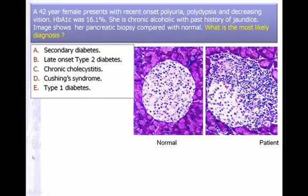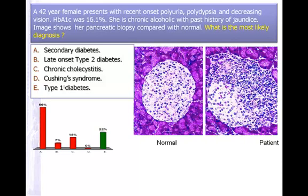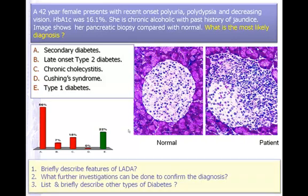This is a tricky one. 42-year-old female presenting with recent onset polyuria, polydipsia, and decreasing vision. HbA1c is high, meaning hyperglycemia. She is a chronic alcoholic with past history of jaundice. The pancreatic biopsy shows inflammation limited to the endocrine pancreas — exocrine pancreas appears perfectly normal. Inflammation only in the endocrine pancreas in an adult with acute onset of diabetes is typical of LADA — latent autoimmune diabetes in adults — which is Type 1 diabetes occurring in adults.